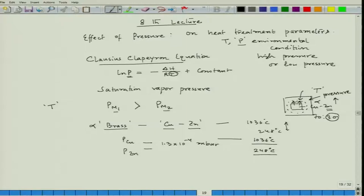We have to operate at slightly higher than atmospheric pressure to stop zinc evaporation. However, we cannot use compressed air because it contains oxygen that might oxidize the brass. So we must use an inert gas such as argon or nitrogen. This is another way to prevent evaporation of the metal and subsequent metal loss from the alloy.